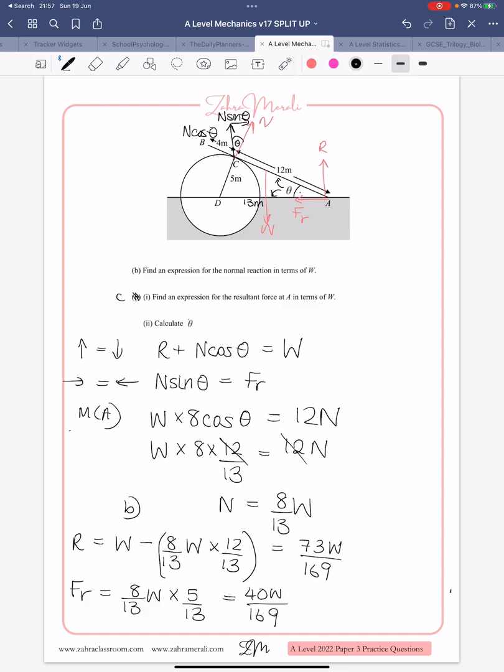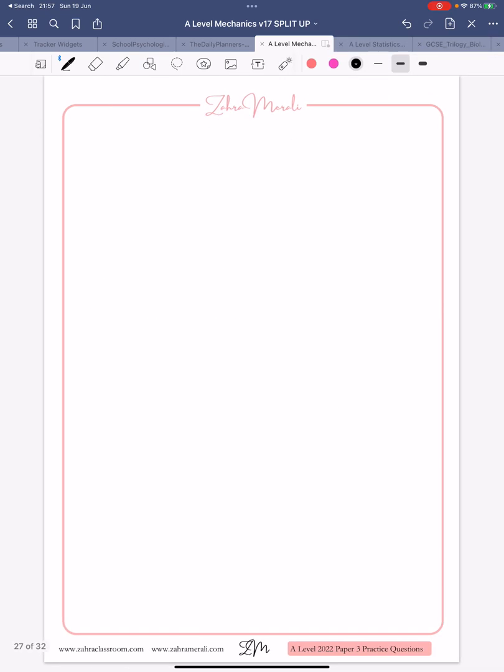So, we've now got our two values. So, let's go to the next page. So, we've got friction, which is acting in that direction, which is 40W over 169. Actually, let's draw that further down so you can see properly. So, we've got friction acting in that direction, and we've got our R acting in that direction.